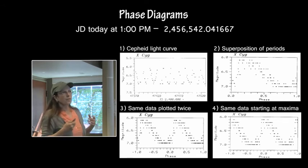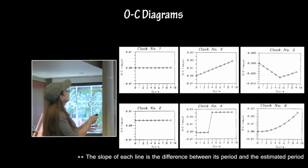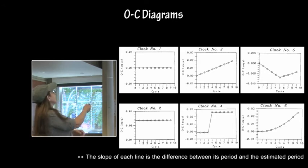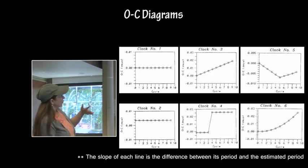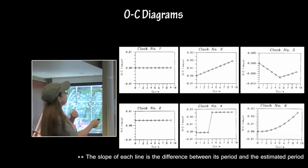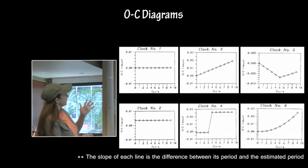So the whole power in science is prediction. So how do you know if you've determined everything correctly? The period and the beginning of the cycle, the maximum, which is called the epoch? Well, you have O minus C diagrams. The observed minus calculated. So you have the phase now on the side, and then you plot your observations and compare them to what you had determined was the period and epoch. Anything that's a straight line is perfectly periodic. If it's not a straight line, it's not periodic. If it is centered on zero, then you have the correct epoch. You have the correct beginning of the cycle.